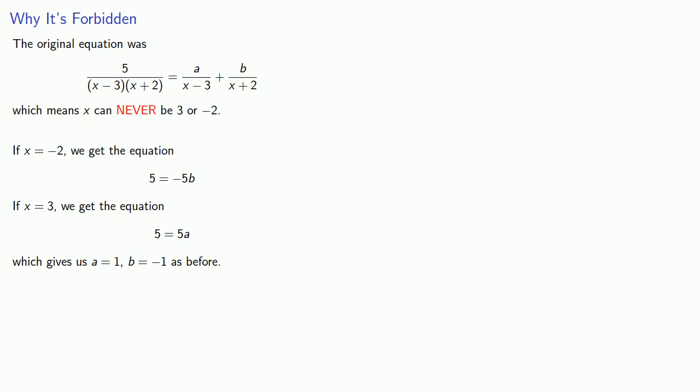Now before proceeding we might want to think about why we can't actually do it that way but why we still do it that way. So remember that our original equation was, and in this equation x can never be 3 or -2. And so when we dropped x = 3, x = -2 and produced an equation in a and b we were taking advantage of a situation that could never exist.